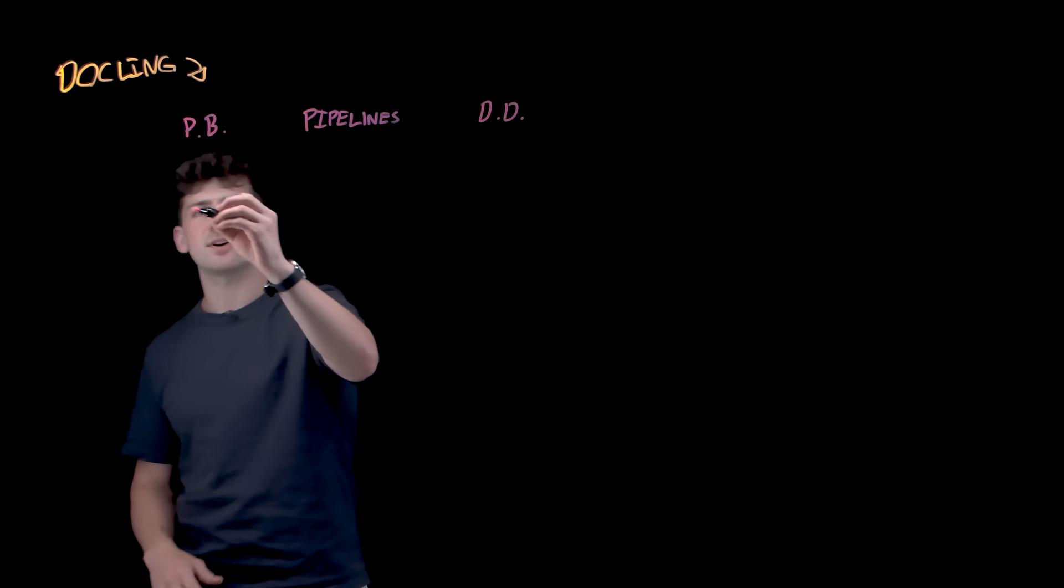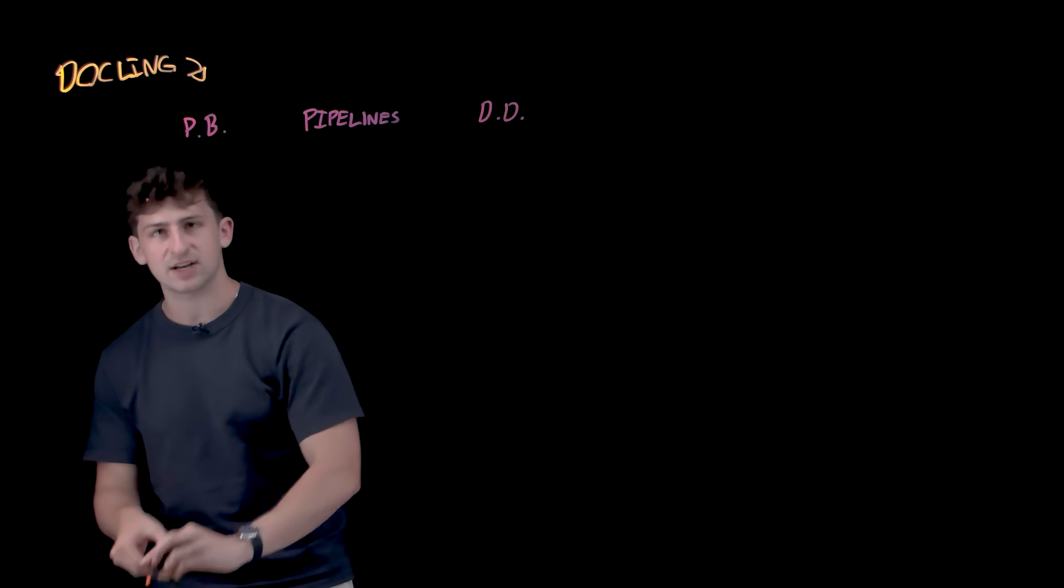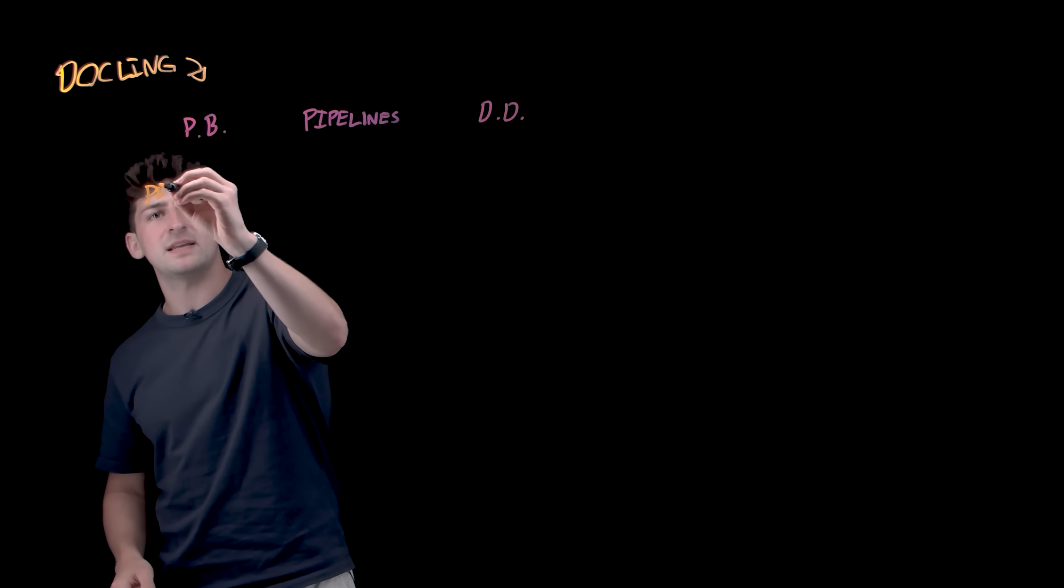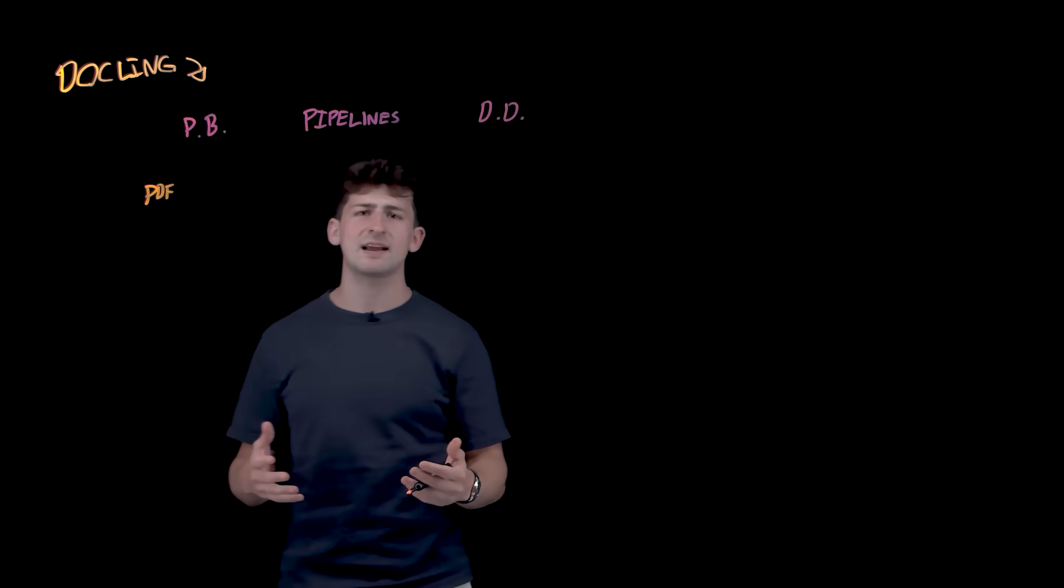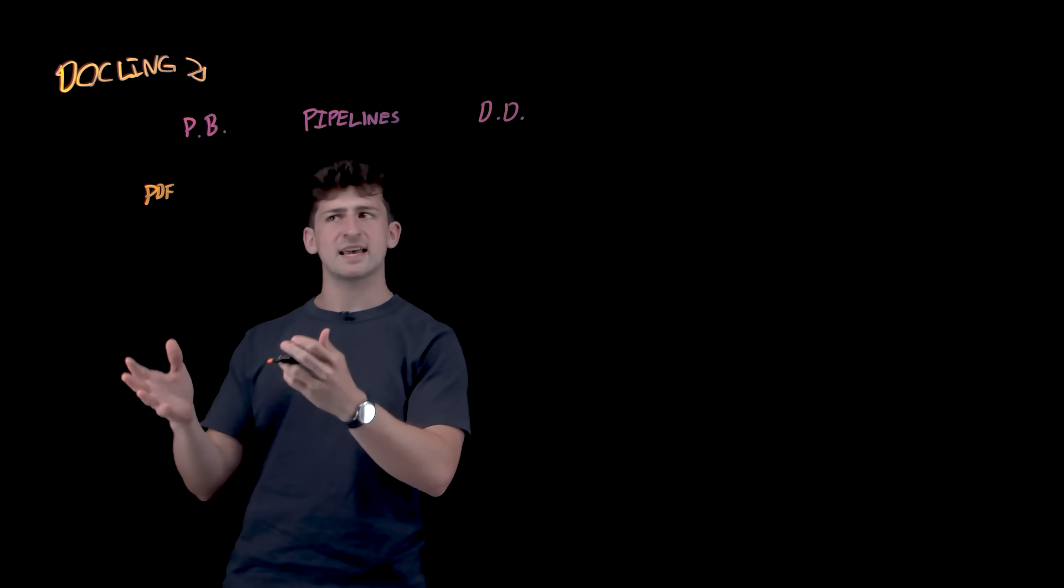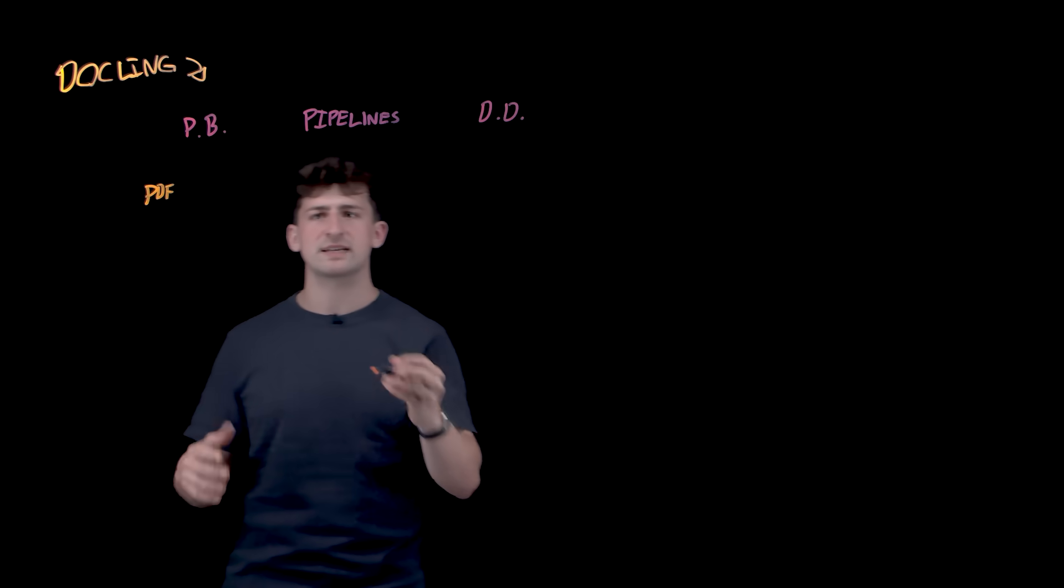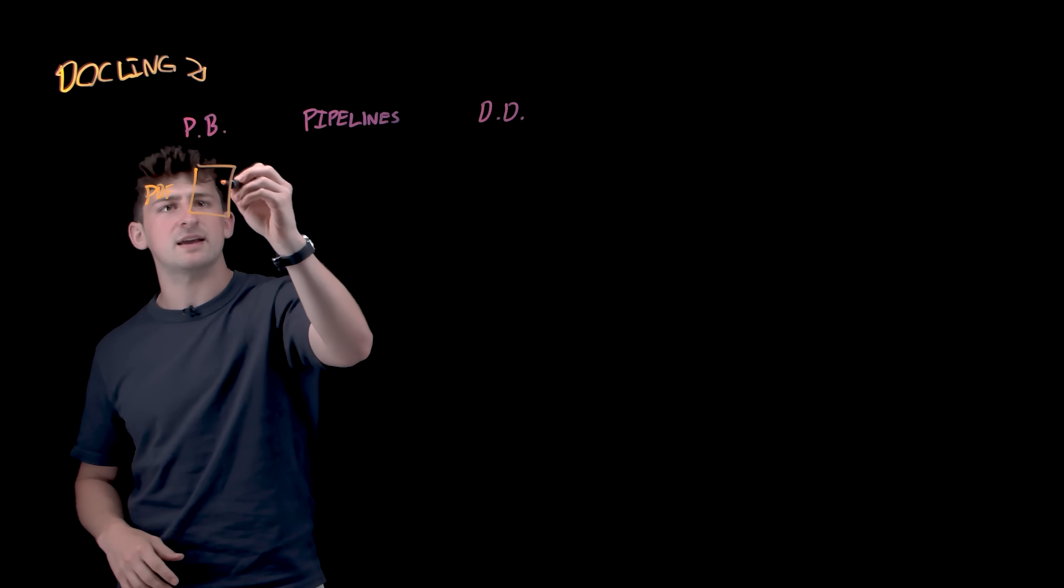Now, there's typically two document types that you're going to be working with to process them, to get them ready to use with AI. First are these low-level formats, such as PDFs, right? So PDFs, it's difficult because they're initially made for printing, right? And so maybe it's scan content as well, but a lot of structure is lost.